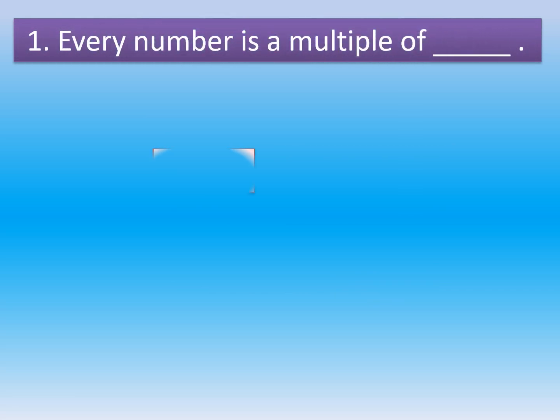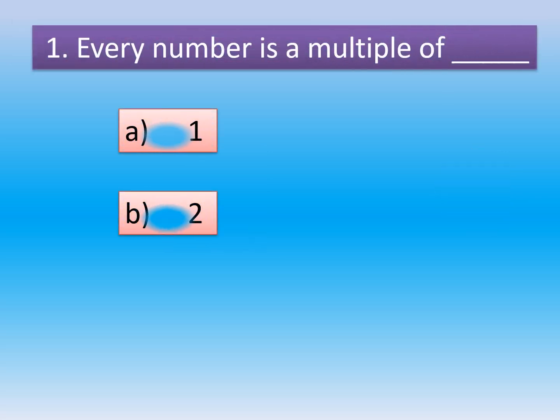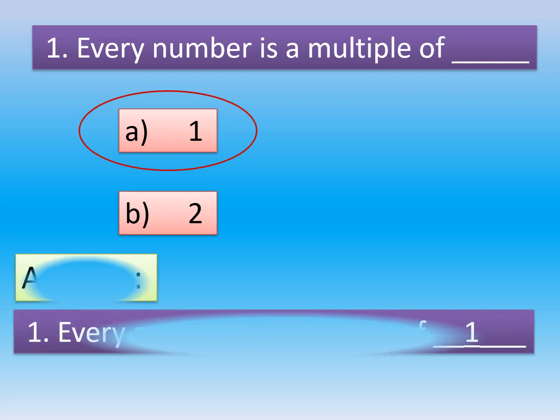Question number 1: Every number is a multiple of dash. Option A, 1. Option B, 2. The correct option is Option A.